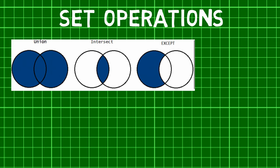First is the UNION operator. The UNION operator combines the results of two SQL queries into a single table of all matching rows. Second comes the INTERSECT operator. This operator takes the results of two queries and returns only rows that appear in both result sets.